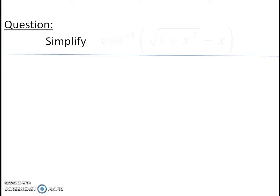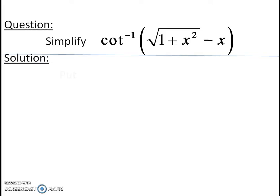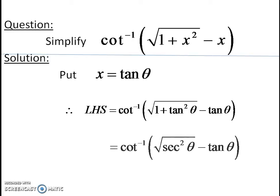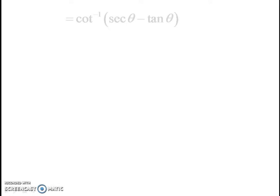The question is: simplify cot inverse of square root of 1 plus x squared minus x. Since we have square root of 1 plus x squared, if we put x as tan theta, then 1 plus tan squared theta gives sec squared theta. So put x equal to tan theta. Therefore the question becomes square root of 1 plus tan squared theta minus tan theta, and since 1 plus tan squared theta is sec squared theta, the expression becomes cot inverse of sec theta minus tan theta.